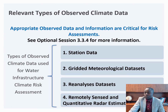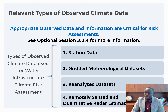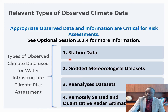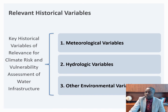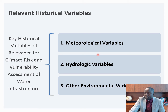Some of the key types of observational climate data sets will now be discussed. Appropriate observed data and information are critical for climate risk assessment. The key types of data typically required for infrastructure climate risk assessment include station data, gridded meteorological data sets, gridded analysis data sets, and remotely sensed quantitative weather data sets. The key historical variables required can be classified as meteorological, hydrological, and other environmental variables.